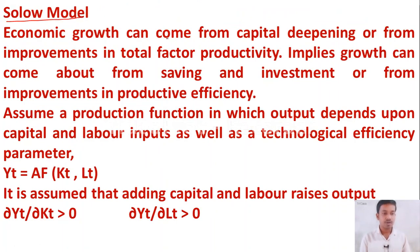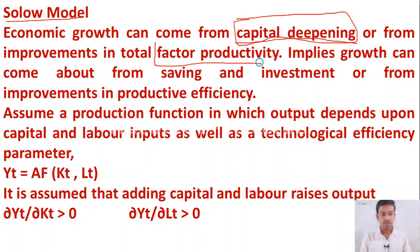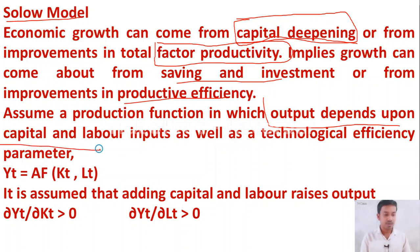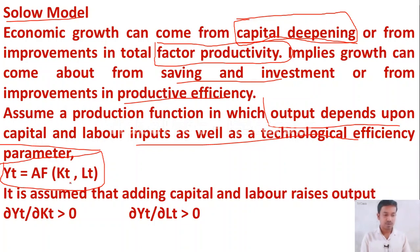In Solow's model, economic growth can come from capital deepening or improvement in factor productivity. This implies that growth can come about through saving and investment or from improvement in productive efficiency. The production function is: Yt = Af(Kt, Lt), where K stands for capital, L stands for labor, and T stands for technological development.